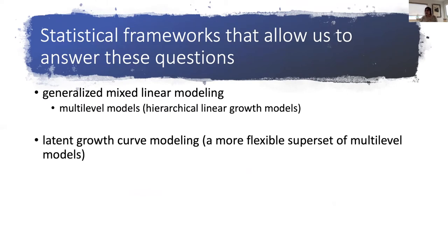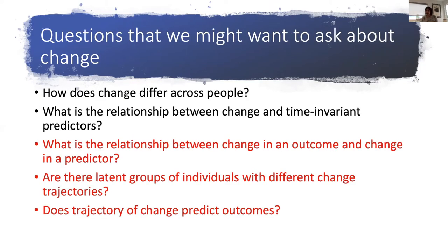There are two statistical frameworks that allow us to answer these questions. The first is generalized mixed linear modeling, also known as multi-level models or hierarchical linear growth models. The second family is latent growth curve modeling, which is a more flexible subset of multi-level models. Only the first two types of questions can be answered by multi-level models; the last three require latent growth curve modeling. A key distinction is that latent growth curve modeling allows you to use change as a predictor and to identify latent classes of trajectories.